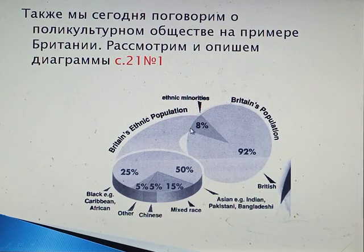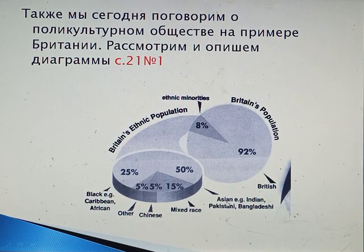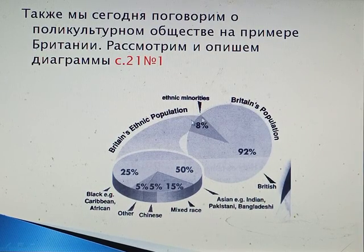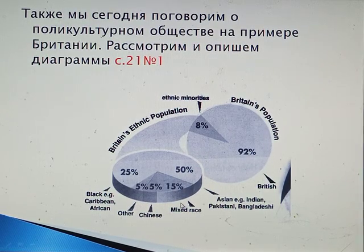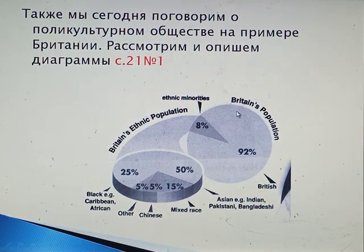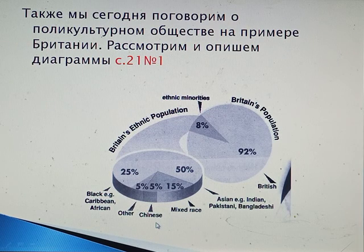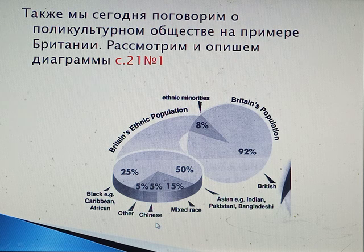50% of this part of the population are Asian — Indian, Pakistani, Bangladeshi. 25% are Black — Caribbean or African people. 15% are mixed race. 5% are Chinese people, and all other nationalities of the world make up only 5% among all ethnic minorities.